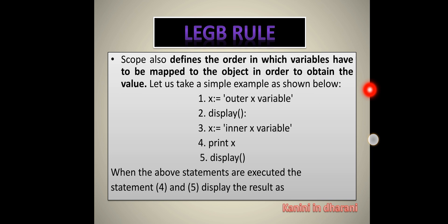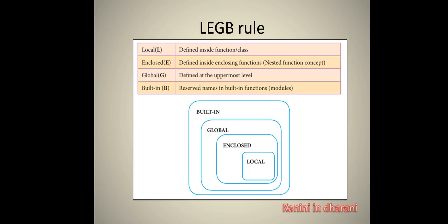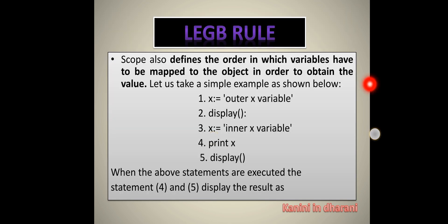In this video we will tell you the LEGB Rules. LEGB stands for Local, Enclosed, Global, and Built-in. Scope defines the order in which variables are mapped with objects. Scope is not a namespace, but all variable names will be mapped.